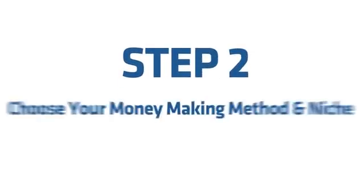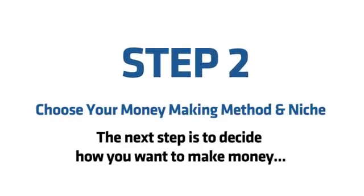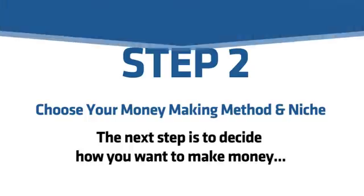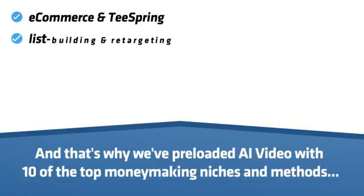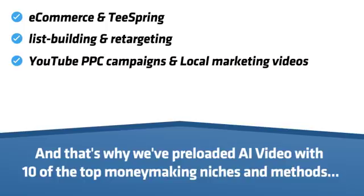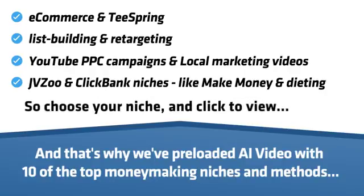Step 2: Choose your money-making method and niche. Decide how you want to make money. We've preloaded AI Video with 10 of the top money-making niches and methods — from e-commerce and Teespring to list-building and retargeting, YouTube PPC campaigns, local marketing, JVZoo and ClickBank niches like Make Money and Dieting.